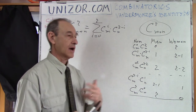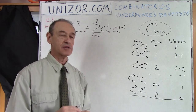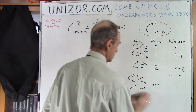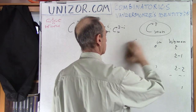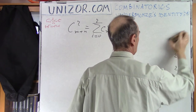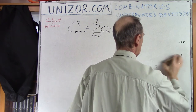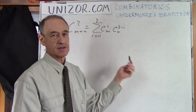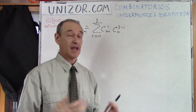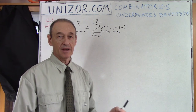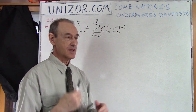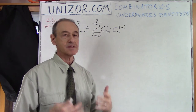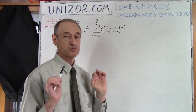And now, another proof of the same identity — kind of elegant, maybe slightly unusual. I just like it because it seems very elegant. It was historically found much later than the original one. The original proof is natural and simple — it goes exactly about the number of combinations, expressed in combinatorial terms. Now I'm going to use pure algebra.